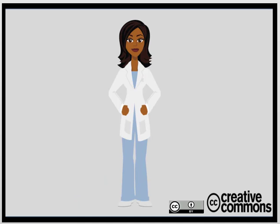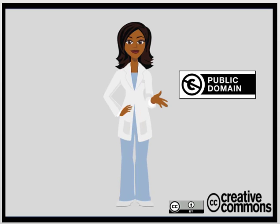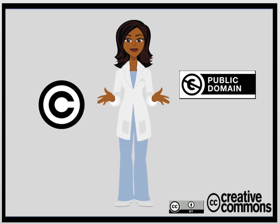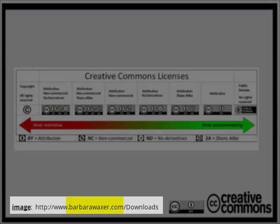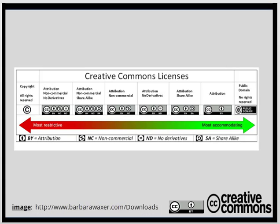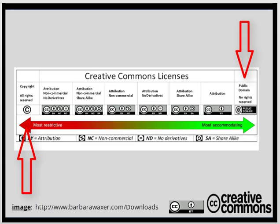Now that we've covered the six Creative Commons licenses, they are bookended by the least restricted use — the public domain — to the most restricted, which is copyright, all rights reserved, where you have to ask permission to do anything. I wanted to share a graphic from barbarawaxer.com — it's downloadable and a great visual showing the six licenses sandwiched between the least restrictive and the most restrictive.